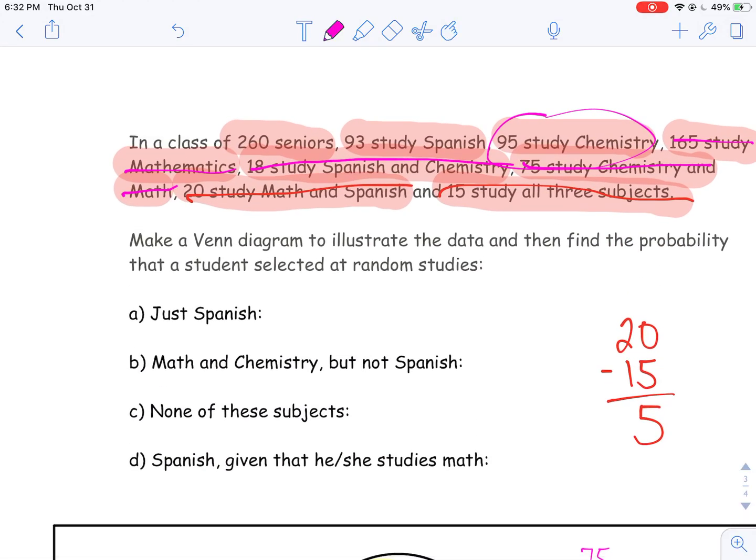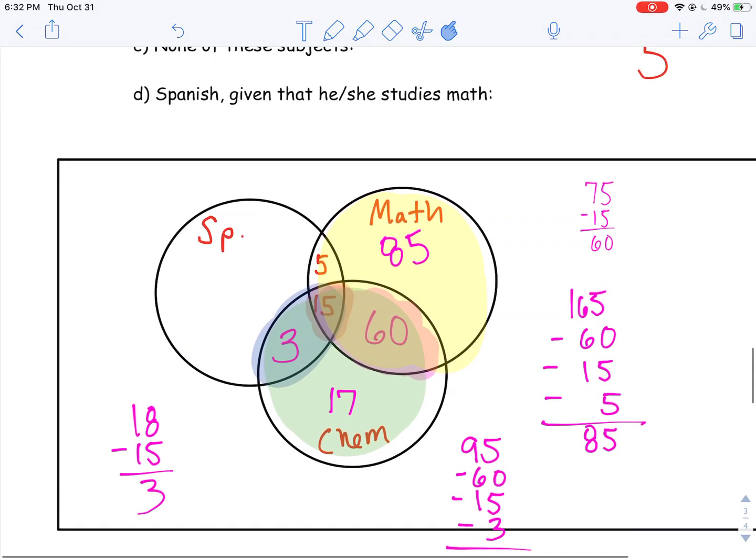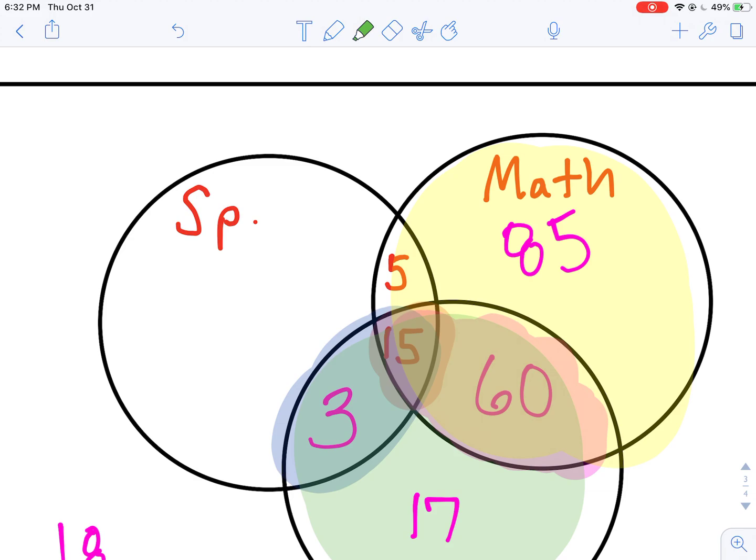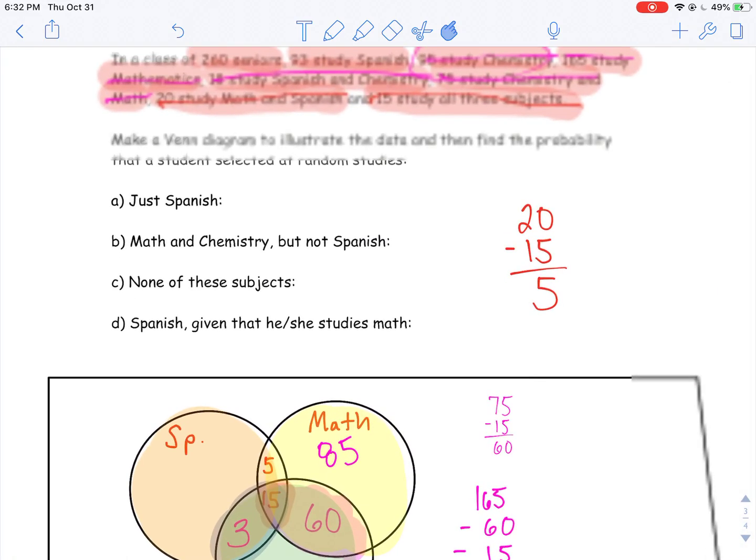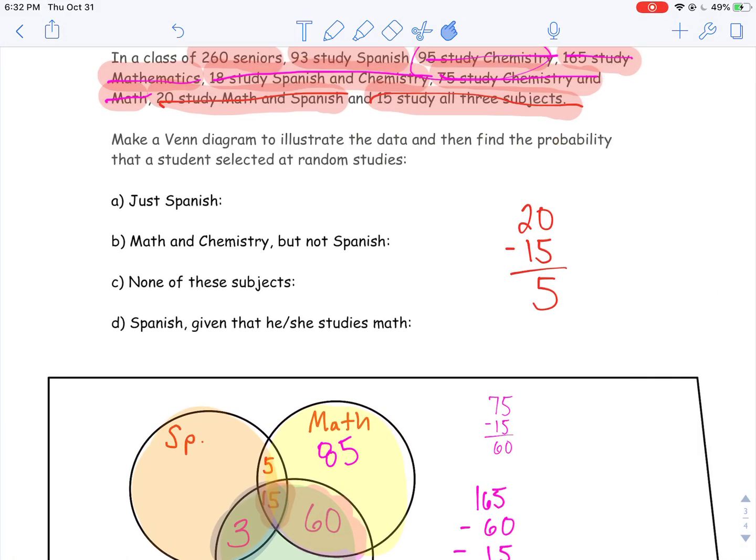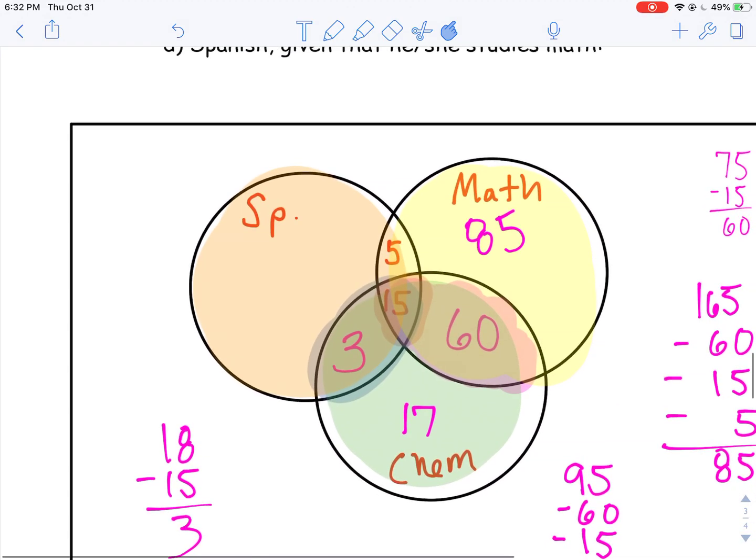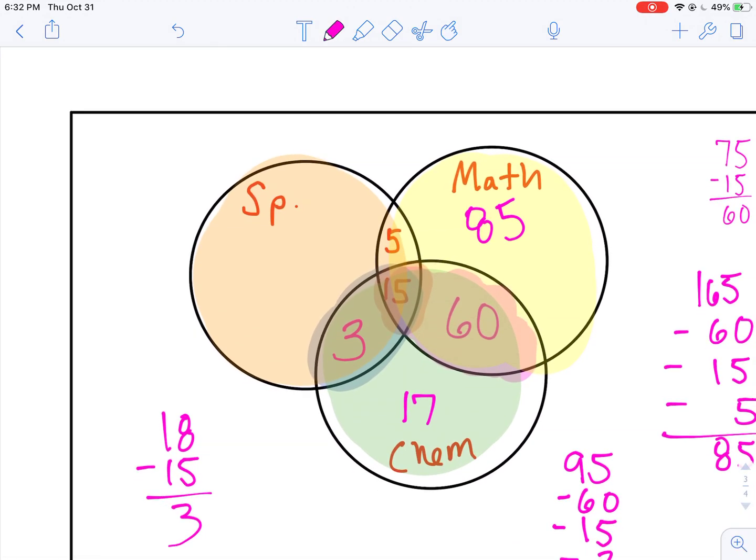Now I have 93 who study Spanish. Hopefully you're catching on to what I'm going to do here. Again, I'm going to look at the whole circle. This whole circle represents those who study Spanish, because it doesn't say anything about them only studying Spanish. I've got 93 who study Spanish.